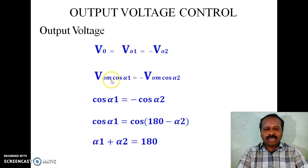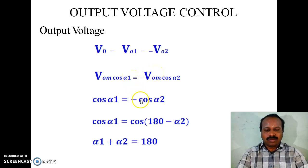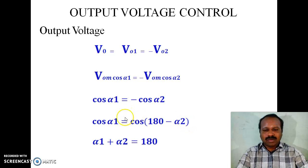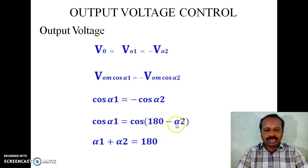Now, V01 = V0m × cos(alpha 1) and V02 = V0m × cos(alpha 2). Since V0m cancels, we get cos(alpha 1) = −cos(alpha 2), which can be written as cos(180° − alpha 2). Since cosines cancel, alpha 1 = 180° − alpha 2, so it becomes alpha 1 plus alpha 2 equals 180°.